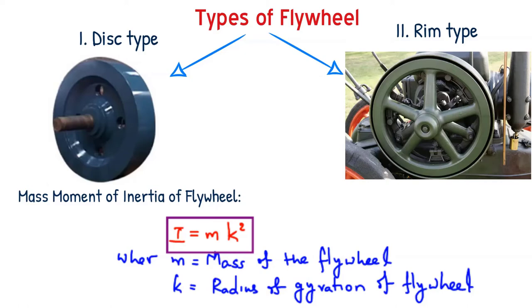The mass moment of inertia of the flywheel is equal to m k squared. So it depends on mass and radius of gyration.